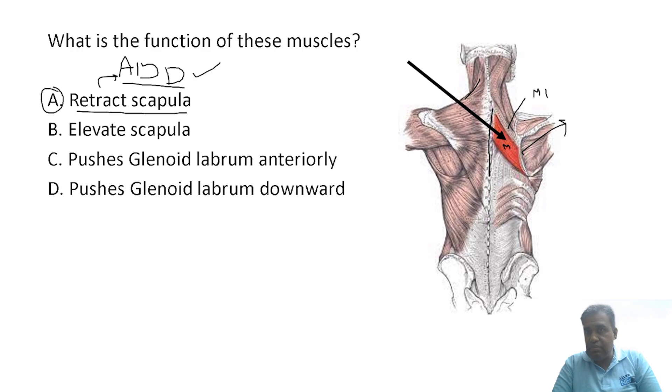The opposite of this will be done by serratus anterior and pectoralis minor - they will do protraction of the scapula. Rhomboid minor and major cause retraction or adduction of the scapula. Don't forget about the middle fibers of trapezius. This triangular muscle trapezius on the left side actually covers these deeper lying rhomboid muscles. The middle fibers of trapezius also cause retraction of scapula, bringing both scapulae close to the midline. Answer is option A. Elevate scapula is levator scapulae, asked 2-3 years back in NEET PG.